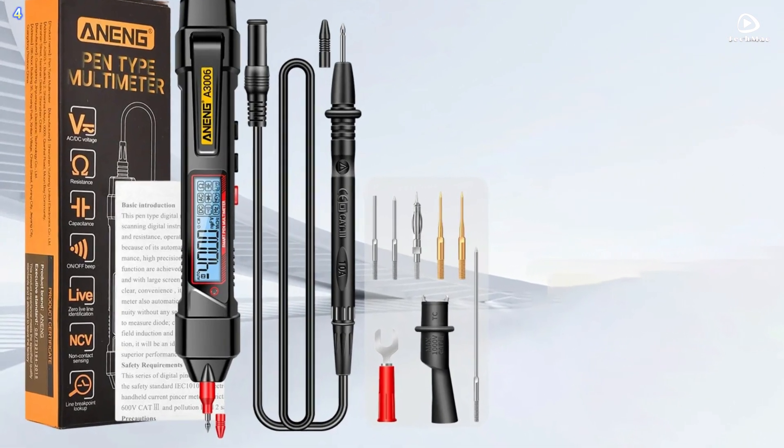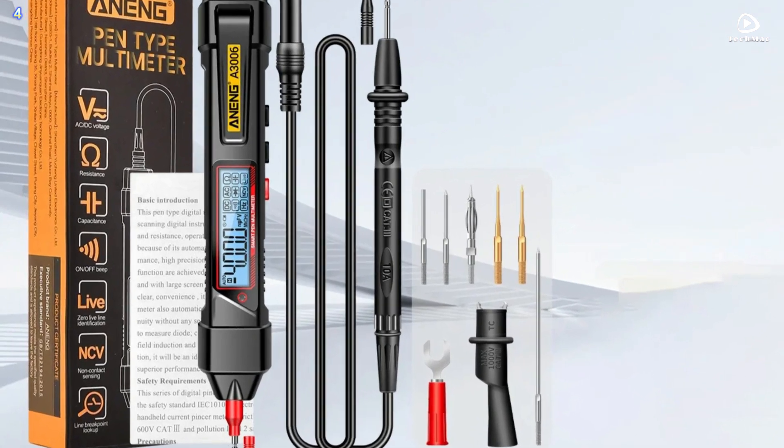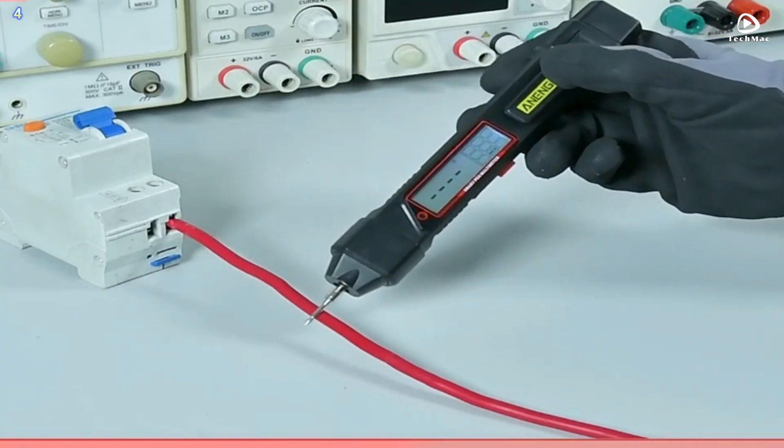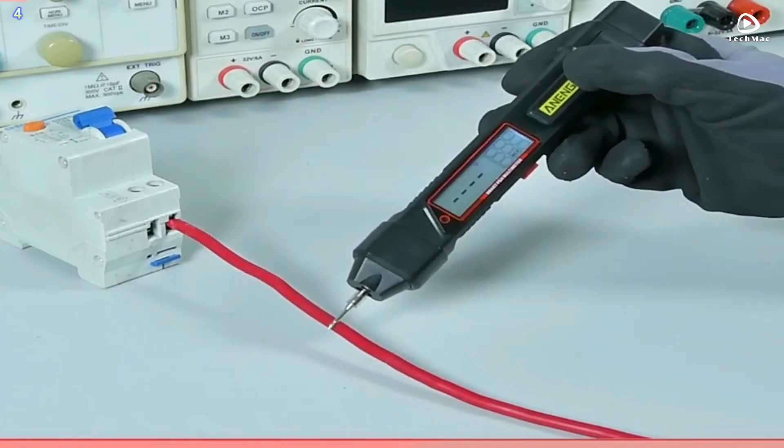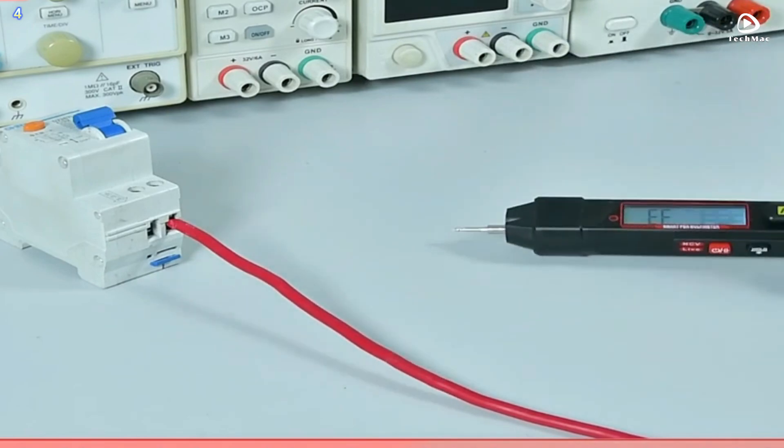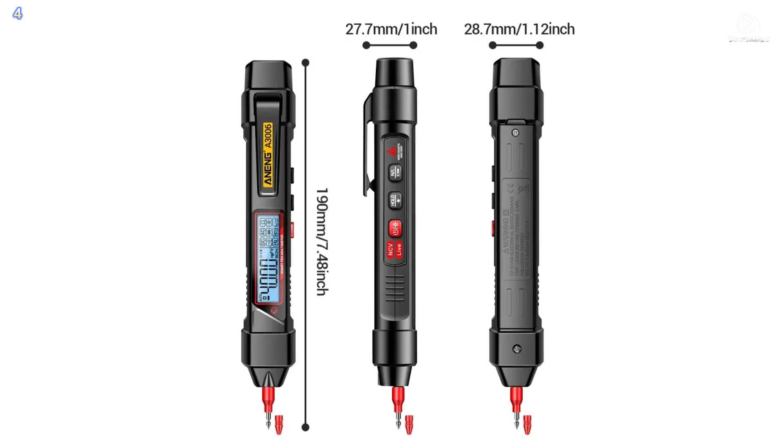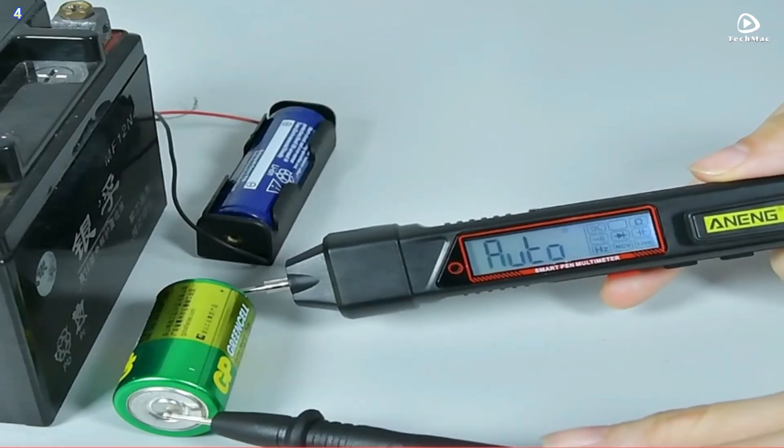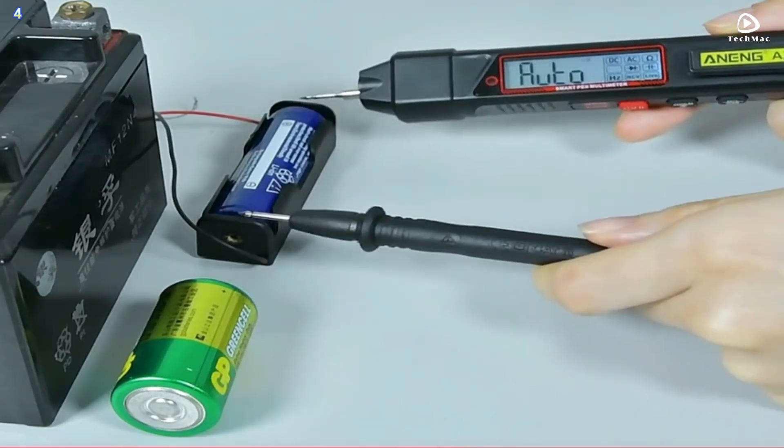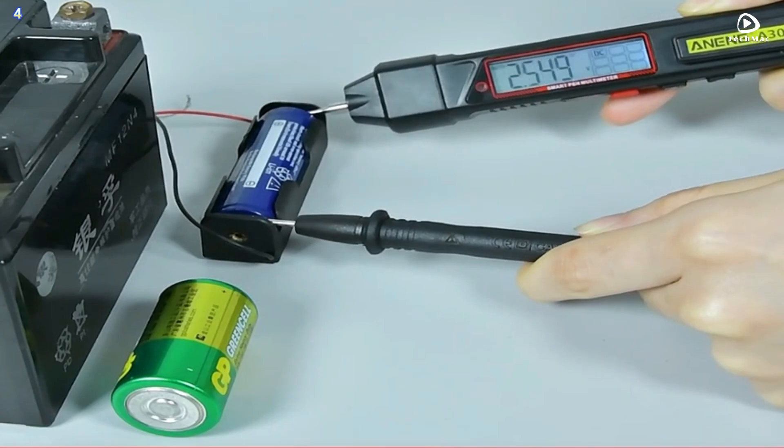This meter is charged by a 1.5-volt battery. And with a large screen LCD beautiful backlight, making the display clear and convenient, it is cherished by most people. The bright LCD screen ensures you can easily read your results, even in low-light conditions.